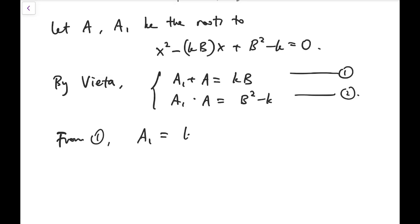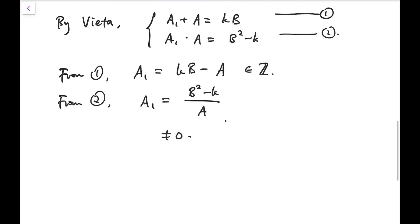So from the first equation, big A1 is kB minus A. And because kB and A are all integers, we know that big A1 is an integer. From the second equation, A1 equals B squared minus k over big A. And because k is not a perfect square, surely this is not 0. So we have shown that it's an integer. And to show that it's positive, we need to show that it's not 0 and also that it's not negative.